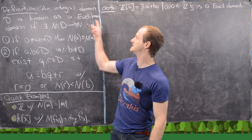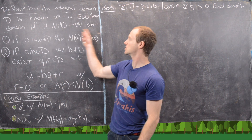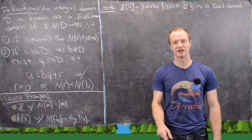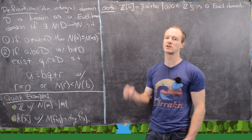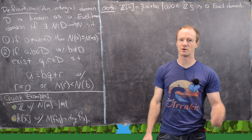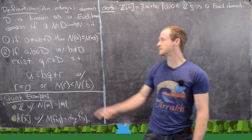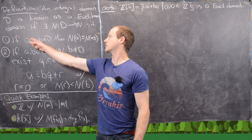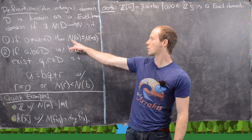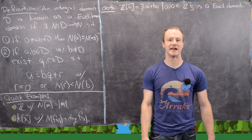An integral domain D is known as a Euclidean domain if we have a function N that goes from the domain D to the natural numbers. This is called a norm function or a valuation function, depending on which author you're looking at, and it has two properties. If you've got two non-zero elements in the integral domain, we'll call them A and B, then the norm of A has to be less than or equal to the norm of A times B.